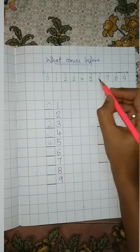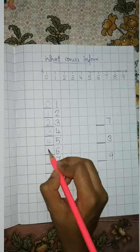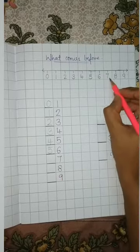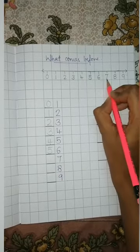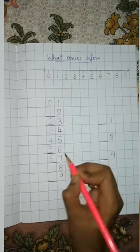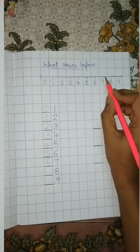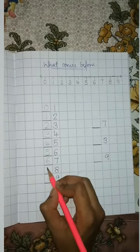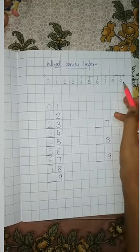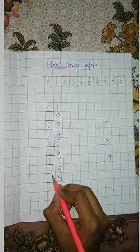This is number 6. Before number 6 is number 5. Very good. Now this is number 7. Before number 7 is number 6. Very good. Now this is number 8. Before number 8 is number 7. Very good. Now this is number 9. Before number 9 is number 8. Very good.